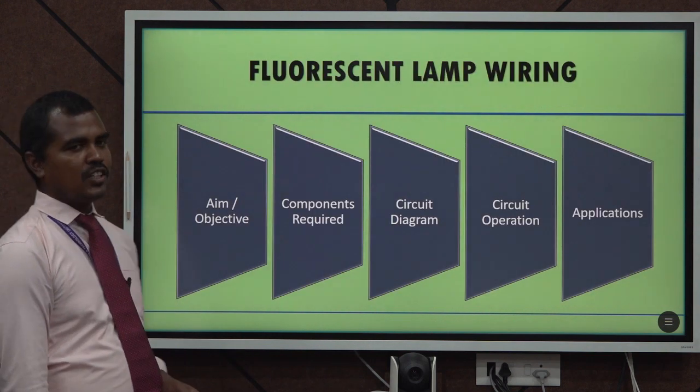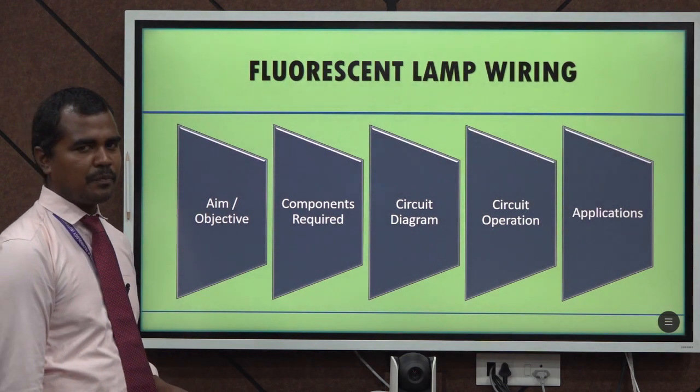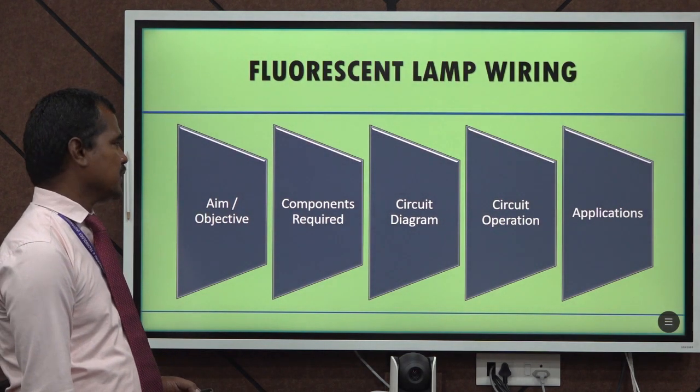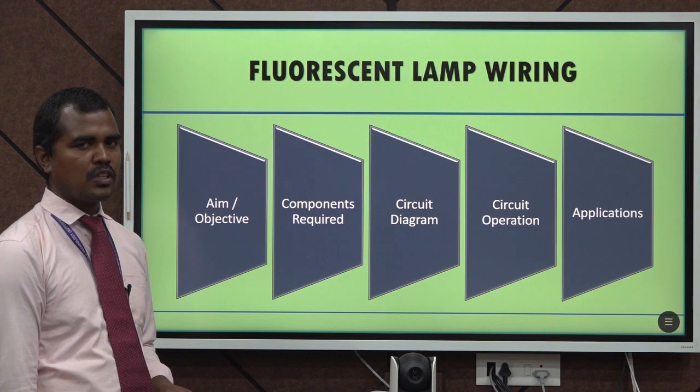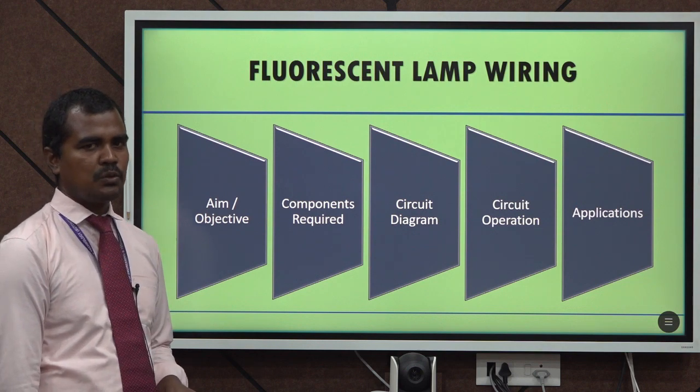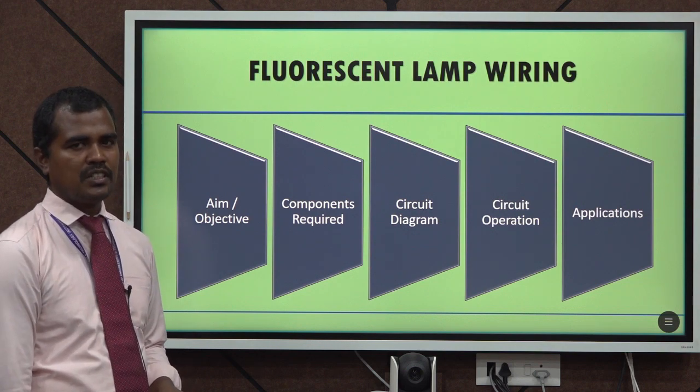Now we are going to see the operation of fluorescent lamp wiring. In this we are going to see the aim and objective, the components required, the circuit diagram, circuit operation and application.